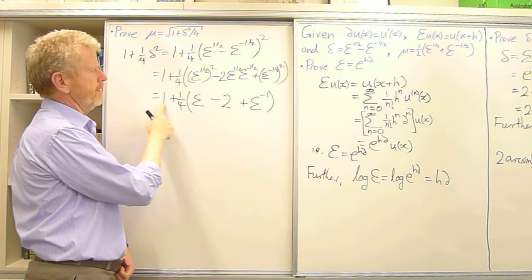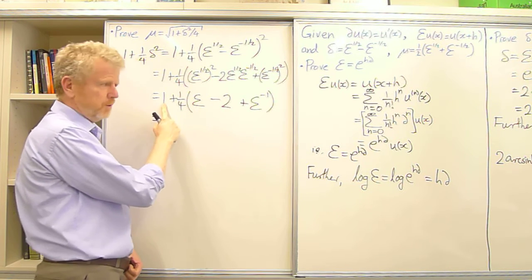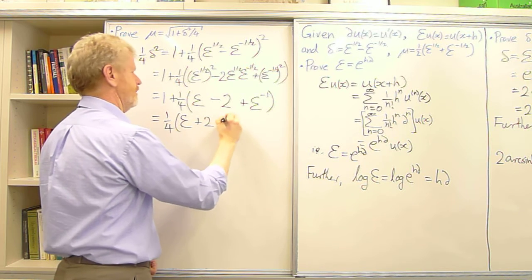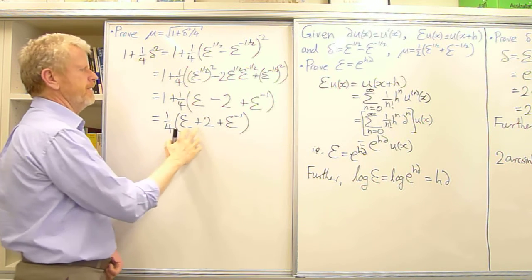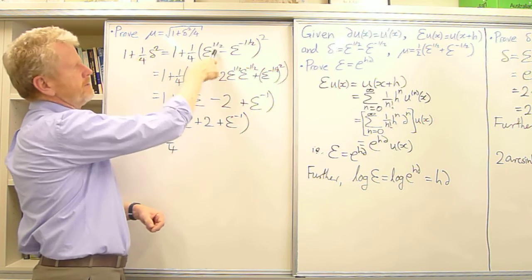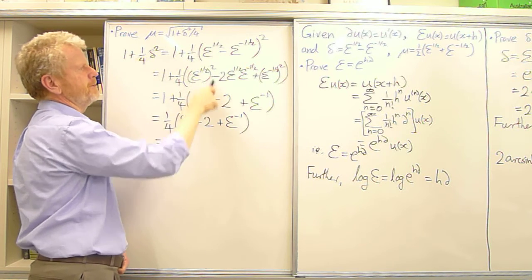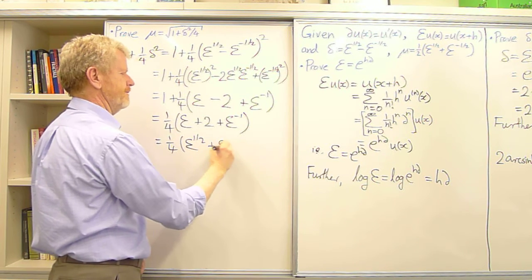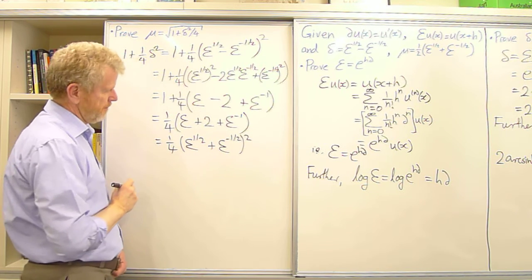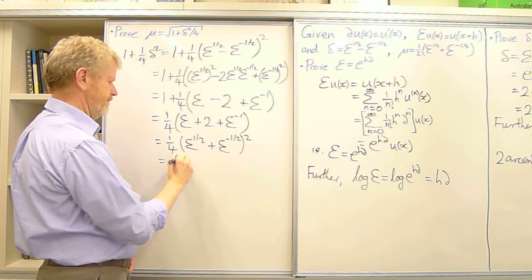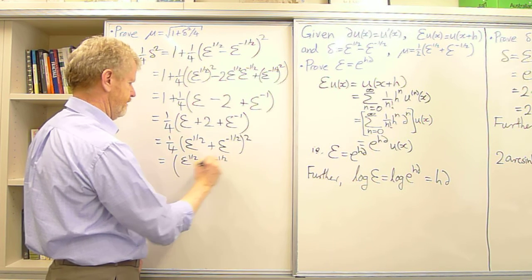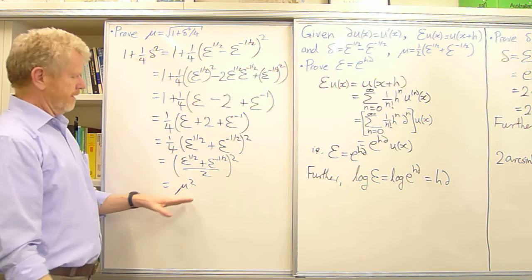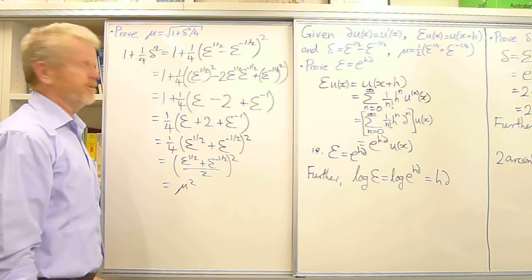So 1 plus a quarter of that: taking the 1 inside gives plus 4, and 4 minus 2 is plus 2, so this is a quarter times (E + 2 + E^(-1)). We recognise this combination as (E^(1/2) + E^(-1/2))², and the quarter is (1/2)², so this equals ((E^(1/2) + E^(-1/2))/2)² which is mu squared. Taking the square root of both sides gives the required identity. Thank you very much.